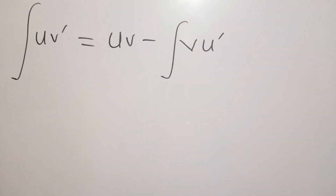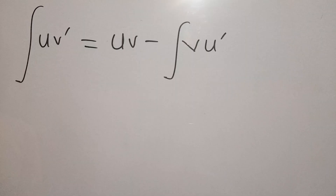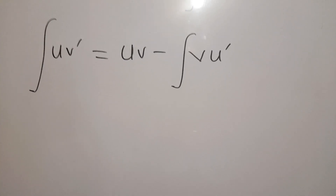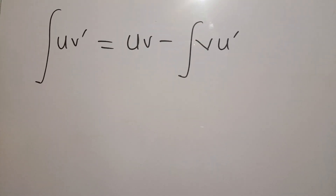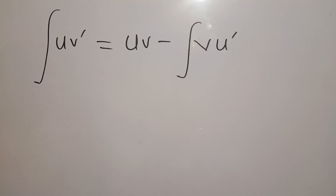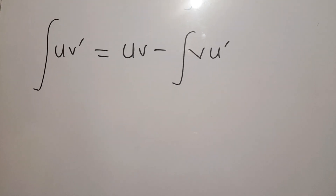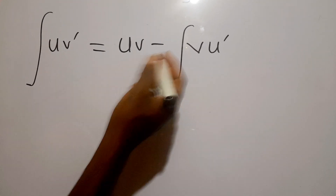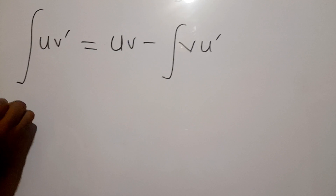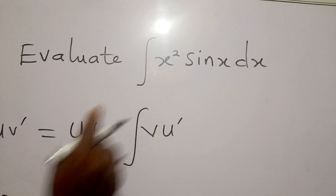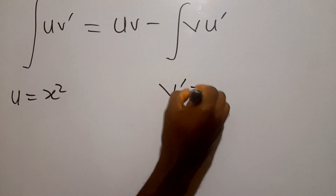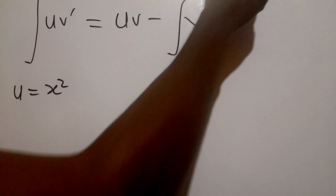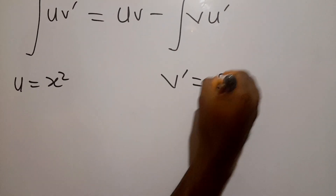If you want to know more about how this formula comes about, check out my videos on integration by parts on YouTube or in the description box. So with that, we let u be equal to the first function here, which is x squared, and v prime to be equal to sine x.